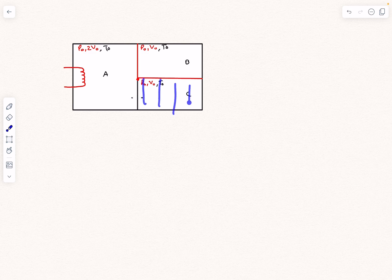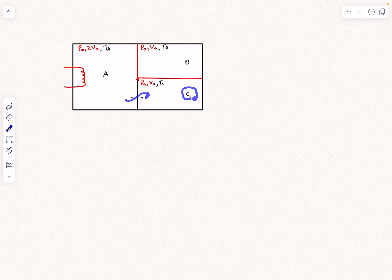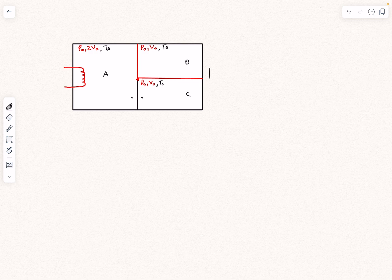As heat is being given to section C, the pressure of the gas inside is going to increase. Some of the heat will go to increase the internal energy of gas C, and some of it will be utilized to perform expansion work. Let's say the piston displaces by a distance of X.